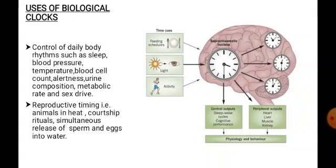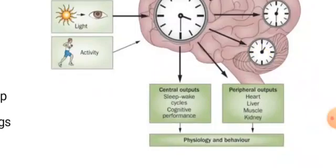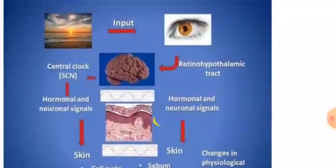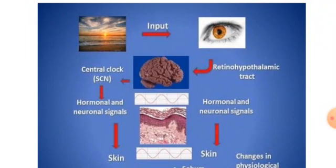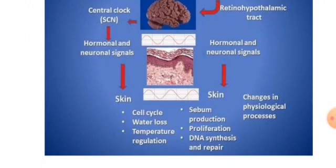Biological clocks also help to regulate reproductive timing — that is, they regulate breeding cycles, when and where an animal is on heat, and spawning behaviors. The suprachiasmatic nucleus transmits signals to all other clocks and gives outputs in two forms: central output and peripheral output. These two outputs control our physiological and behavioral functions. Light, as an exogenous zeitgeber, stimulates the suprachiasmatic nucleus, which then transmits hormonal and neuronal signals to regulate physiological processes like cell cycle, temperature regulation, and sebum production.